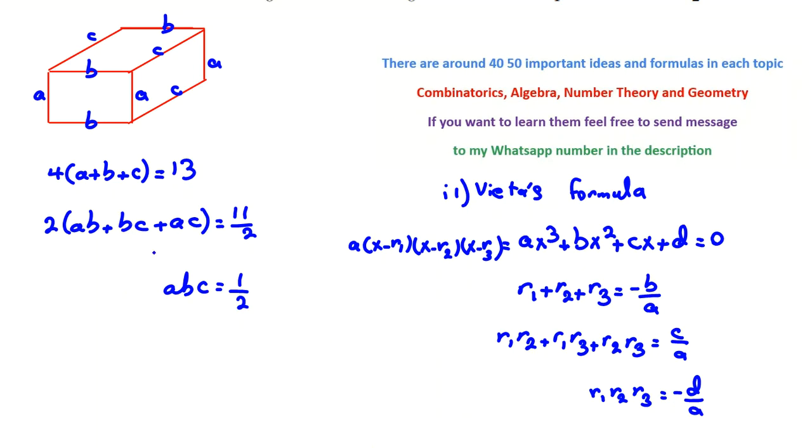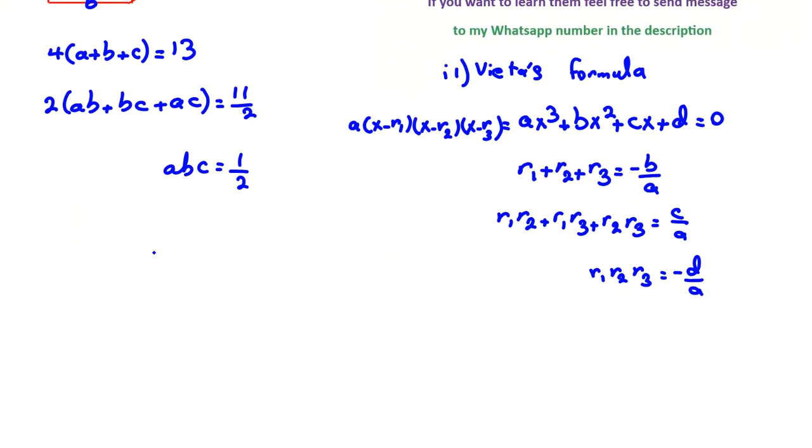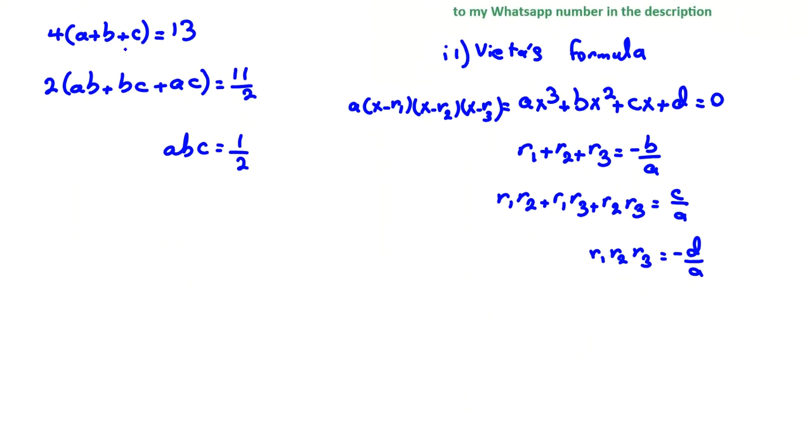Now I want to write a polynomial where the roots are a, b, c. First I simplify: a + b + c = 13/4, ab + bc + ac = 11/4, and abc = 1/2.